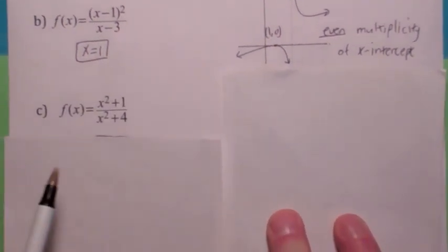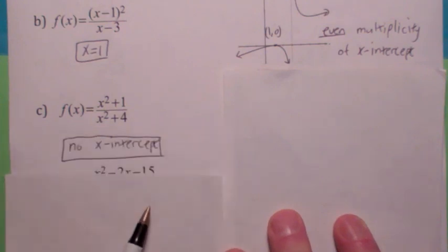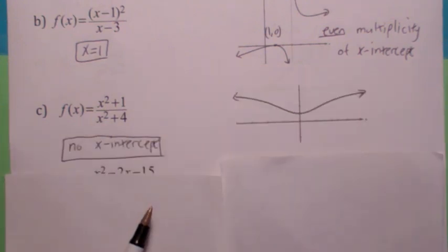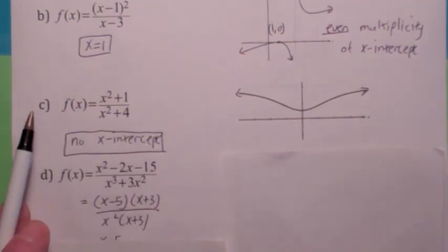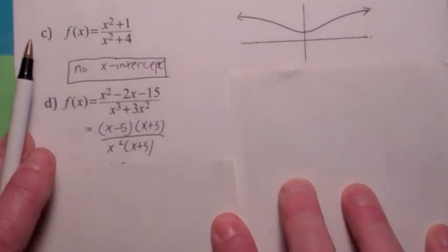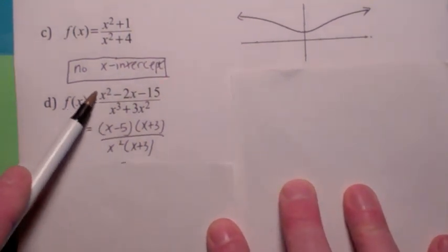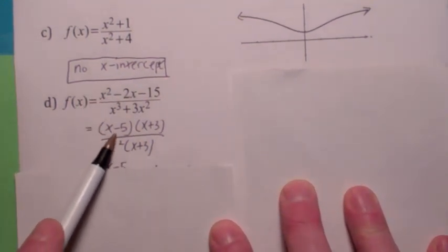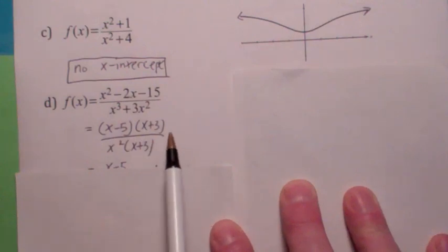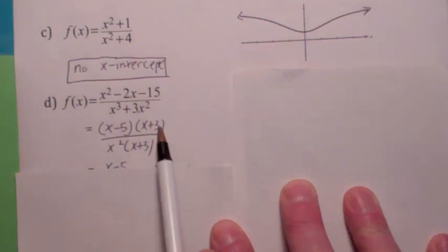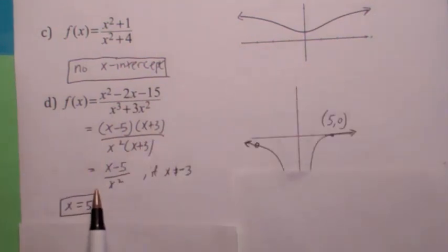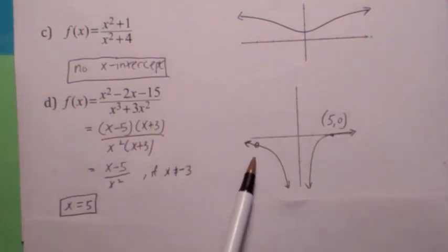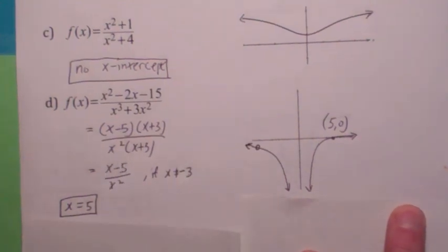In one function, the numerator being zero yields no x-intercepts — so you don't have to have one. In another example, when you factor the top and bottom, you get an x-intercept at x equals 5. You do not get an x-intercept at x equals negative 3 because there's a hole there — a factor on the bottom too — so negative 3 gives a hole, not an x-intercept.